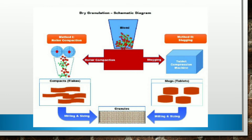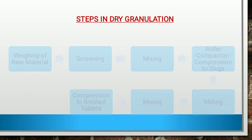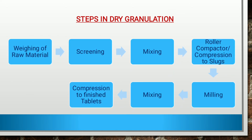The steps involved in dry granulation are: weighing of raw materials, then screening, then mixing, then roller compaction or compression to slugs, then milling, mixing, and finally compression to the finished tablet.